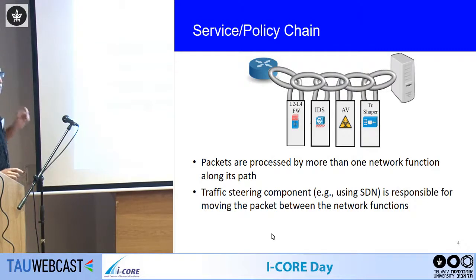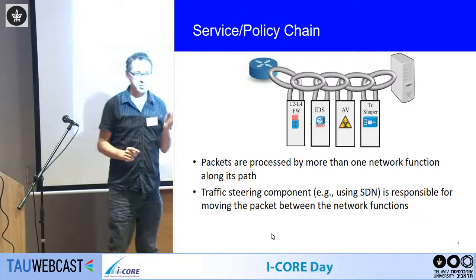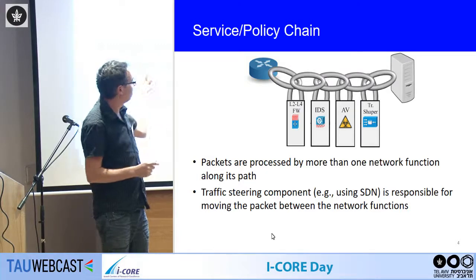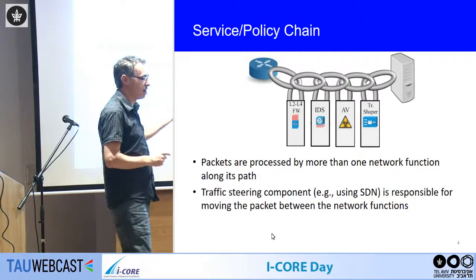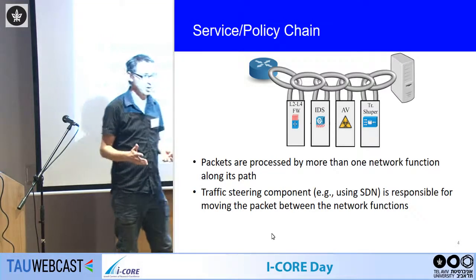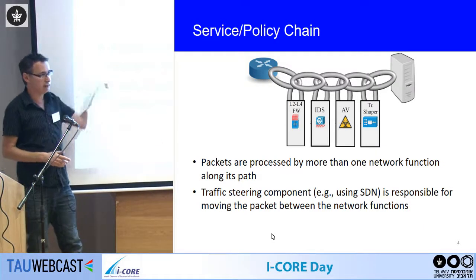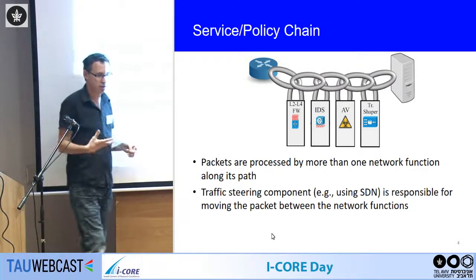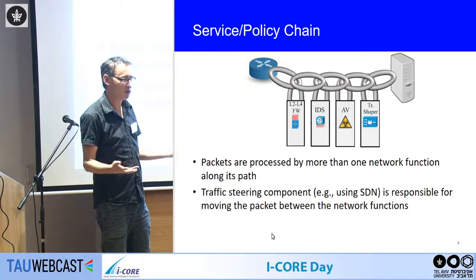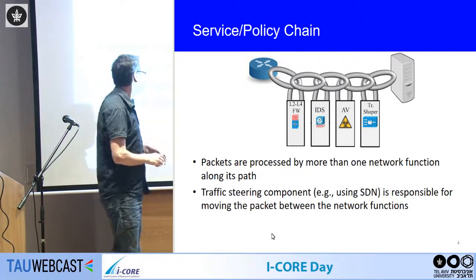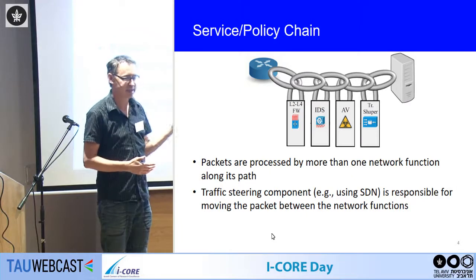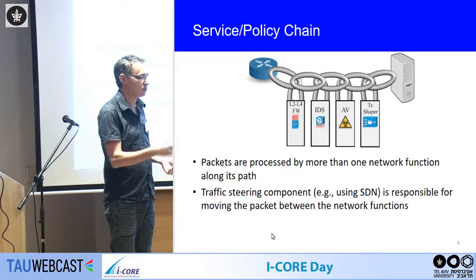Another important point: a packet going from source to destination doesn't traverse only one middlebox — it traverses several network functions. This is called service chaining or policy chaining. For example, a packet goes through a firewall, then an intrusion inspection system, then a network antivirus, then a traffic shaper. This traffic steering is achieved using software-defined networking, which has more flexibility than simple longest-prefix-match routing, and there is a close relationship between NFV and SDN.